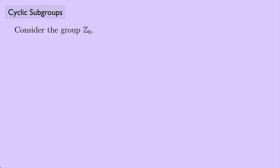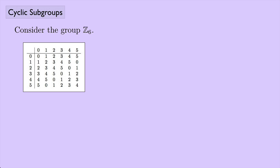Consider the group Z6. Here is a group table for Z6 — the group of numbers 0, 1, 2, 3, 4, and 5 under addition mod 6.